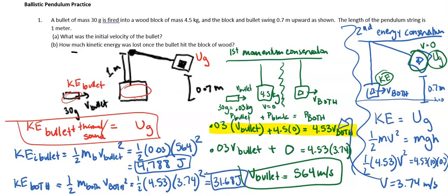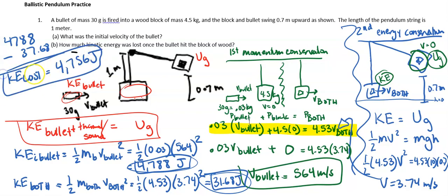So the question really asks for how much is lost. So we have 4,788 at the beginning and 31.68 at the end. So we can just subtract. 4,788 take away 31.68. And then I get KE lost to be around 4,756 joules. Awesome. Thank you so much for watching. And let me know if you have any questions.